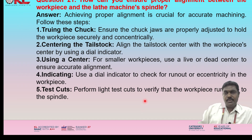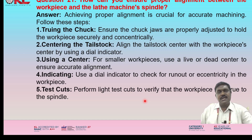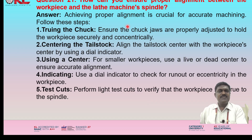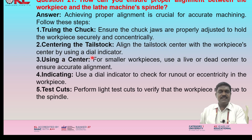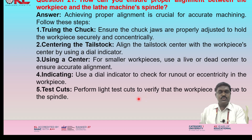How can you ensure proper alignment between the workpiece and lathe spindle? Achieving proper alignment is crucial for accurate machining. Steps include: truing the chuck — ensure the chuck jaws are properly adjusted to hold the workpiece securely and concentrically; centering the tailstock — align the tailstock center with the workpiece center using a dial indicator; using centers — for smaller workpieces, use a live or dead center to ensure accurate alignment; use a dial indicator to check for runout; and perform light test cuts to verify that the workpiece runs true to the spindle.